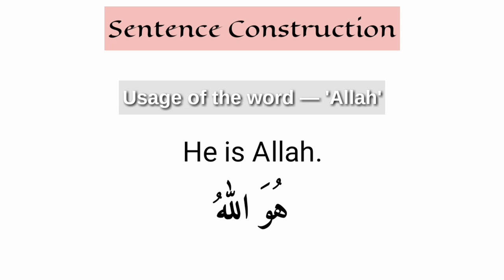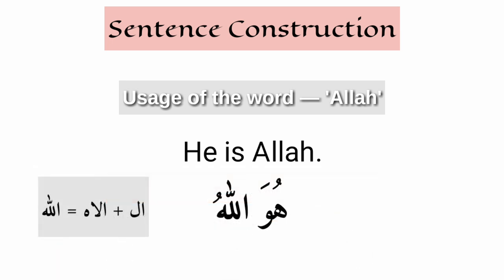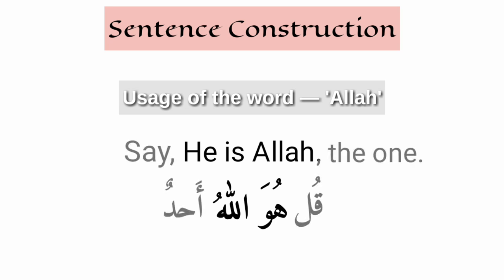Grammatically, only grammatically, when using the word Allah in a sentence, it is considered as if it's al-ilah — the God. That's why tanwin is never used with it. So it can never be Allahun, Allahan, or Allahin. It's only Allahu, Allaha, Allahi in cases one, two, and three respectively. We never put tanwin on the word Allah.